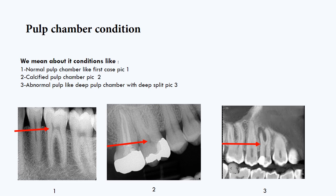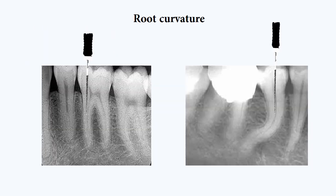Next is to know the root curvature. Root anatomy is highly complex and unpredictable. Knowledge of the normal anatomy and its frequent variations can greatly enhance the success rate of endodontic practice. Routine periapical radiographs help us assess the number, length, curvature, and configuration of the canal system. Root canal curvatures can be apical curve, gradual curve, or sickle-shape curve.